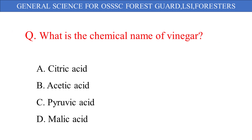What is the chemical name of vinegar? The given options are: A. Citric acid, B. Acetic acid, C. Pyruvic acid, D. Malic acid. And the correct answer is option B: Acetic acid.